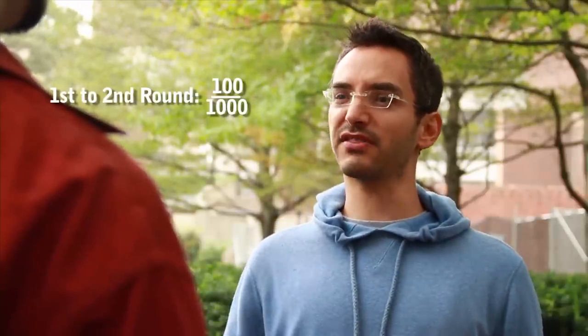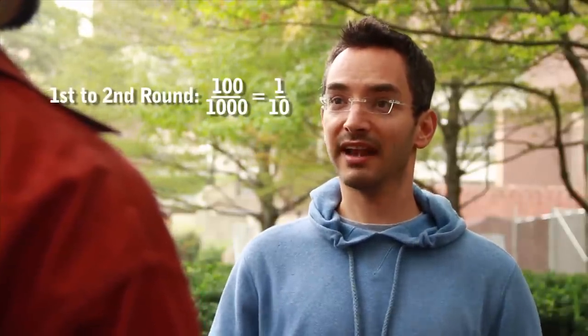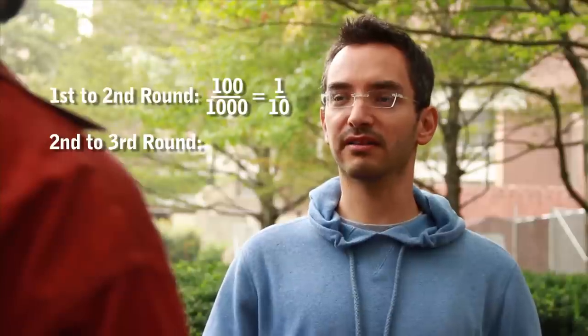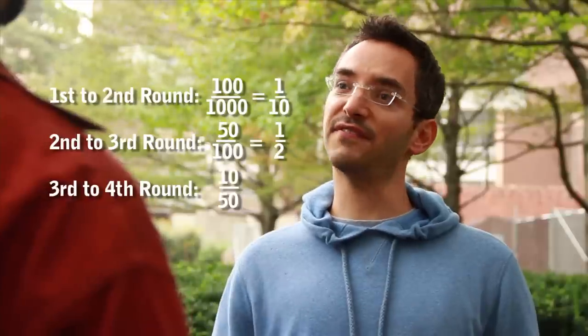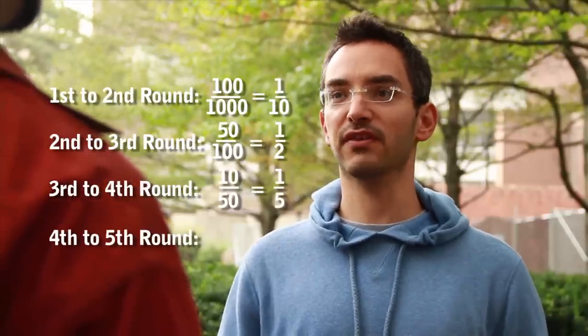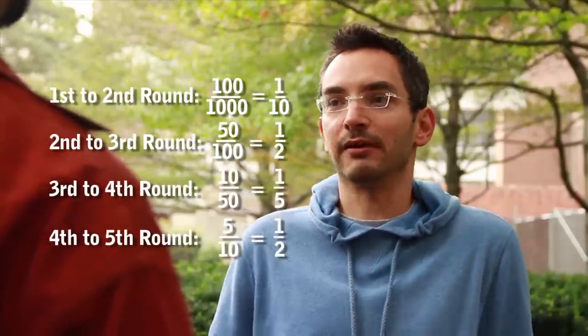The odds of making it from the first episode to the second is 100 out of 1000, which simplifies down to 1 in 10. Then from the second to the third round, it's 50 out of 100, which simplifies to 1 in 2. Then from the third to the fourth, it's 10 out of 50, which is 1 in 5. And from the fourth to the fifth, it's 5 out of 10, which is 1 in 2 again. So that's four different sets of odds.